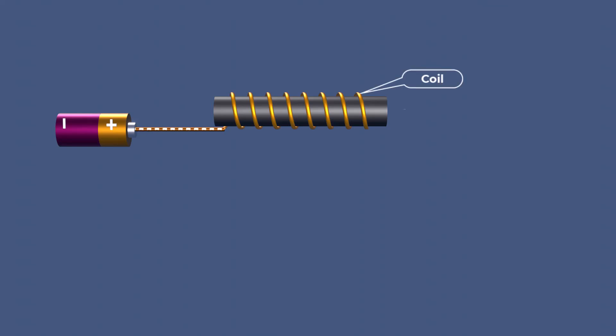This combination of a coil and core is called an inductor, also referred to as a coil, choke, or reactor.